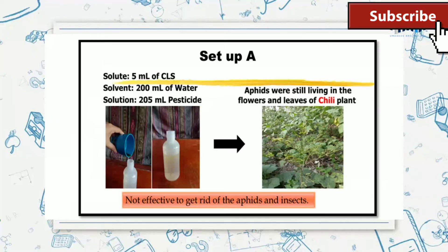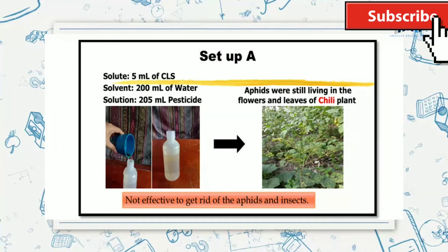In setup A, 5 ml of compost liquid substance was added to a 200 ml of water. A 205 ml pesticide was used to spray a chili plant in the garden. Aphids were still living in the flowers and leaves of chili plant. Therefore, the solution is not effective to get rid of the aphids and insects.